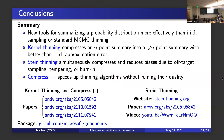In conclusion, I presented two new tools for summarizing a probability distribution more effectively than IID sampling or standard MCMC thinning. First, kernel thinning takes an n-point summary and outputs a sqrt(n)-point summary of comparable quality, matching minimax lower bounds up to log factors. Second, Stein thinning performs compression and bias correction simultaneously, making it ideal for tempering, approximate MCMC, and automatic burn-in removal. Finally, Compress++ speeds up any thinning algorithm from quadratic to almost linear time with at most a factor-of-four error increase.